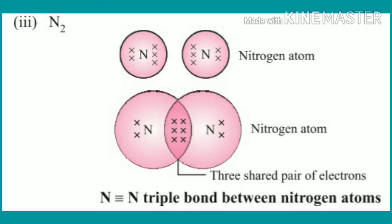Next is nitrogen. N2 is a diatomic molecule. Atomic number of nitrogen is 7: K-shell fills with 2, leaving 5 electrons in the outer shell. To complete the octet, each nitrogen atom needs 3 more electrons, so they share 3 pairs of electrons. Three shared pairs of electrons means nitrogen forms a triple bond between the two nitrogen atoms.